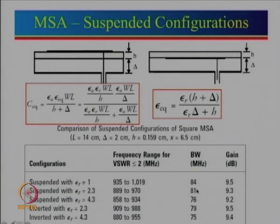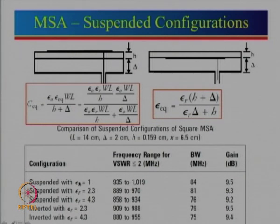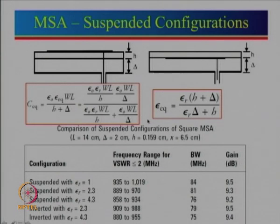The resonance frequency was 935 MHz for epsilon r = 1. When epsilon r = 2.3 was used, it reduced to 889 MHz, because epsilon equivalent increased from 1 to roughly 1.1. For epsilon r = 4.3, epsilon equivalent is slightly higher, so the resonance frequency is slightly lower. But in terms of percentage bandwidth, the change is very small. This configuration can therefore be used with a low-cost substrate without losing much gain.